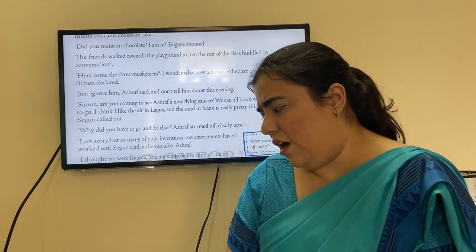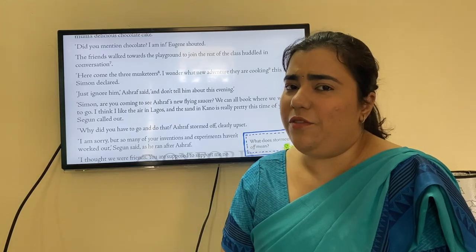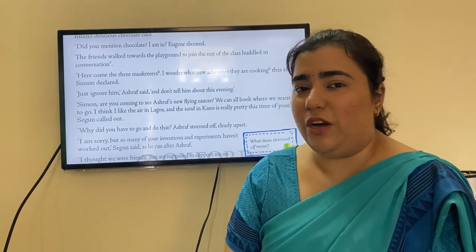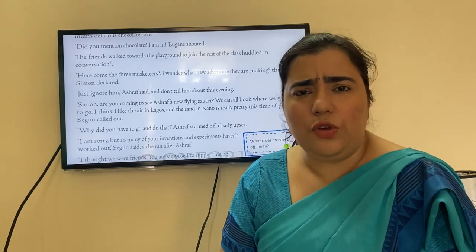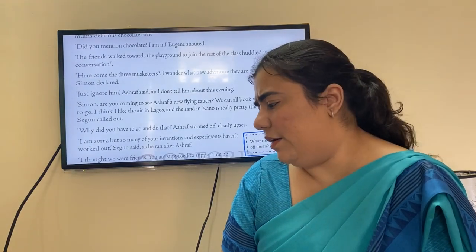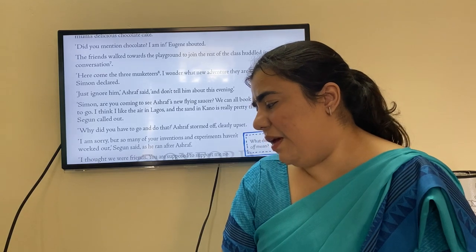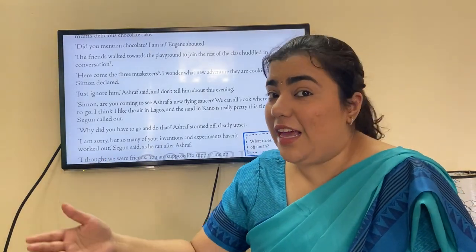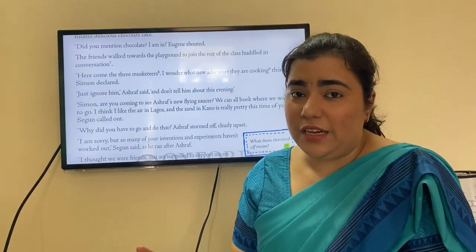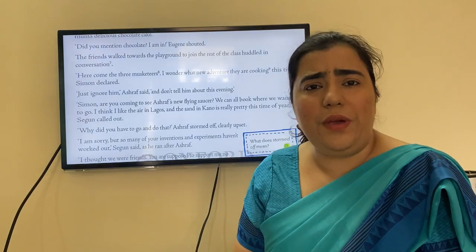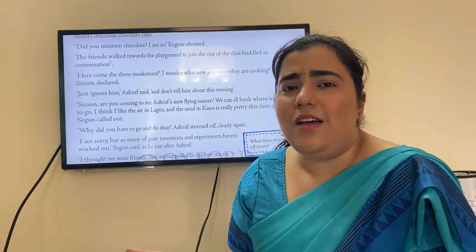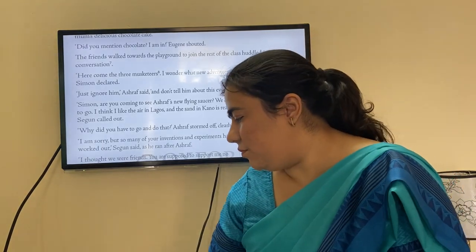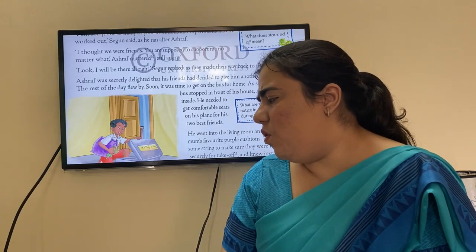'Why did you have to go and do that?' Ashraf stormed off, clearly upset. Ashraf had told them not to share their evening plans, but Segan went ahead and told Simon anyway, so Ashraf was really angry. 'I'm sorry, but so many of your inventions and experiments haven't worked out,' Segan said as he ran after Ashraf to cheer him up.